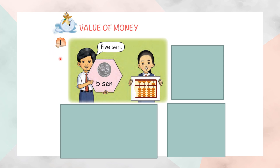We look at example one. This is five cent. You have to write five and cent — S-E-N, sen. In words it is five cent.